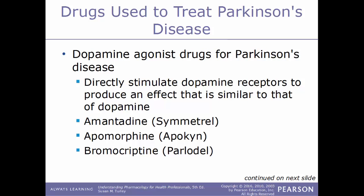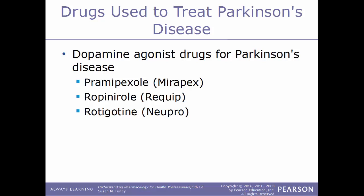Another kind are dopamine agonist drugs, which directly stimulate dopamine receptors to produce an effect similar to dopamine. Examples include amantadine (Symmetrel), apomorphine (Apokyn), bromocriptine (Parlodel), pramipexole (Mirapex), ropinirole (Requip), and rotigotine (Neupro).